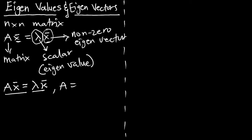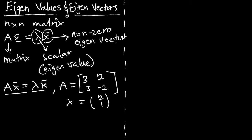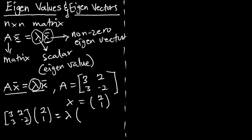Assuming we have a matrix A equal to [3, 2; 3, -2], and we take an eigenvector equal to [2, 1]. Let's find out the eigenvalue. We know that matrix A, which is [3, 2; 3, -2], multiplied by the vector [2, 1], is equal to a certain lambda multiplied by the vector [2, 1]. This is a 2-by-2 matrix multiplied by a 2-by-1 vector.